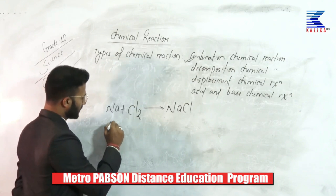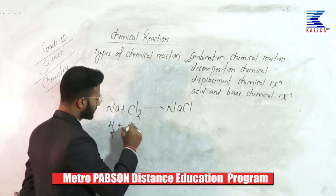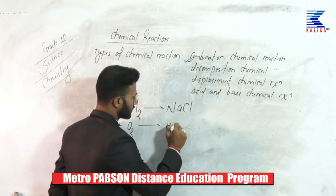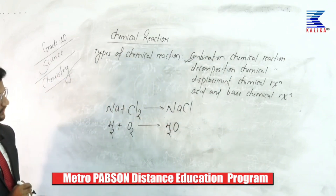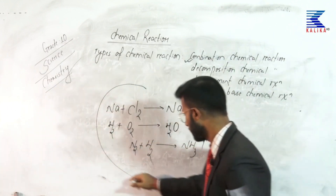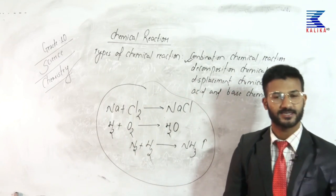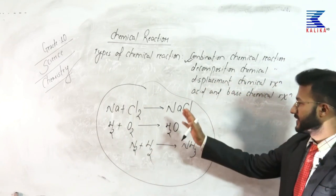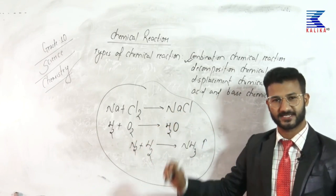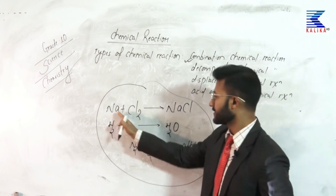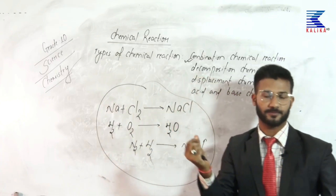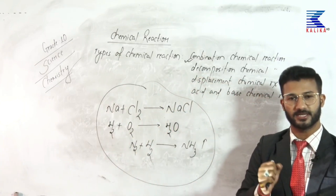One more example: when hydrogen and oxygen are reacted together, it forms a water molecule. This is also a combination chemical reaction. Combination chemical reactions are also called addition chemical reactions, and they have also been given another name — synthesis chemical reaction. Two or more different types of reactant molecules must combine to form a single type of product molecule to be a combination chemical reaction.